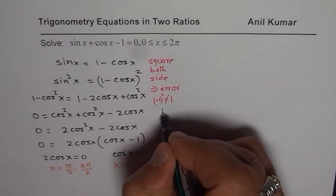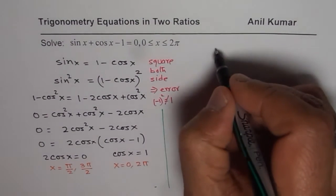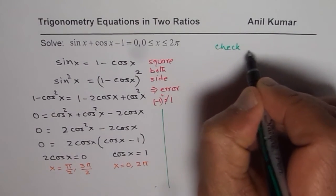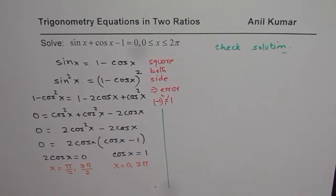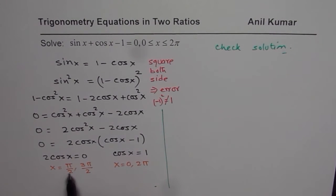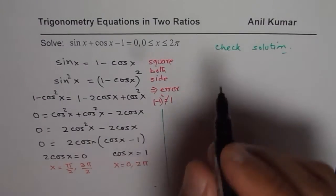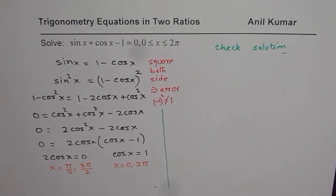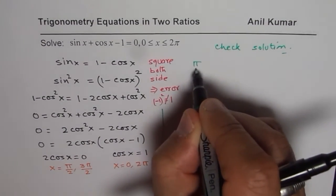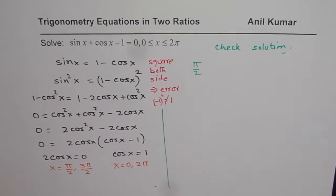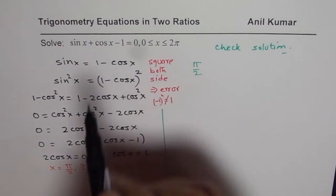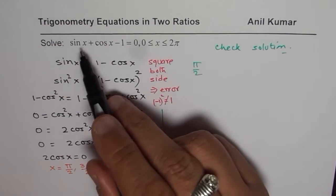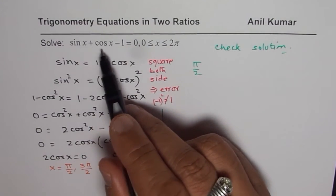As you know, there could be an error. So let us check solution now. Let us check for pi by 2. So if I write pi by 2 in this equation, which is sin x plus cos x minus 1 equals to 0. So we know for pi by 2, sin is 1 but cos is 0. So it works.